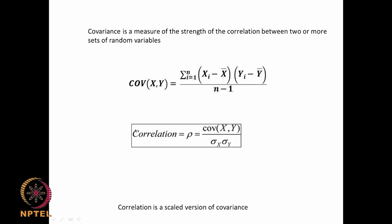The correlation coefficient — sometimes called Pearson's correlation coefficient — is covariance(X, Y) divided by sigma_X times sigma_Y, where sigma_X is the standard deviation of X and sigma_Y is the standard deviation of Y. Correlation is a scaled version of covariance. Covariance can be a large number, but correlation always lies between 0 and 1, making it very convenient to interpret.